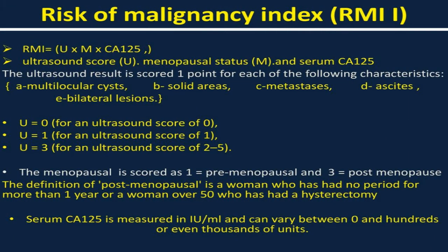The risk malignancy index is a tool used to evaluate ovarian cysts, to know the risk and likelihood of malignancy of the ovarian cyst, how to manage it, and who will manage it. This will be determined according to the result of the risk malignancy index.